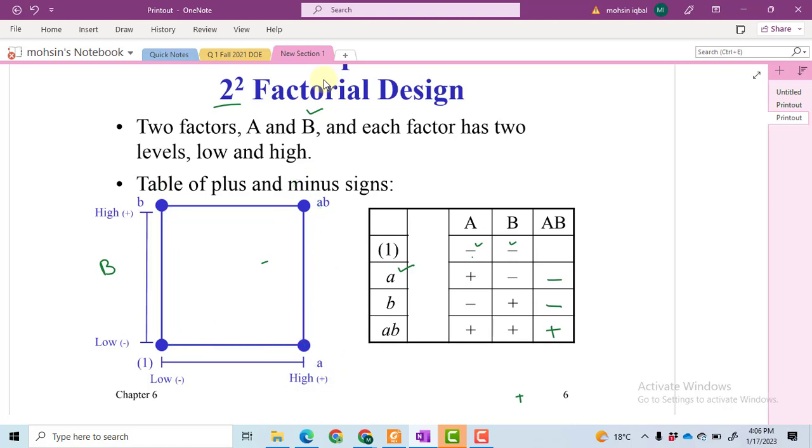To calculate the effect of B, we take the sum of these two values where B is at high level, then subtract B at low level. For example, if it comes out to be 10 and 4, we do 10 minus 4. This is how we calculate it.